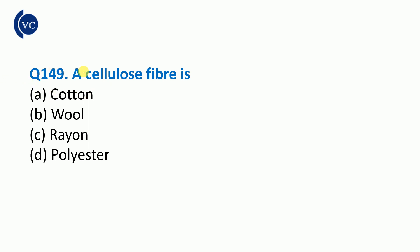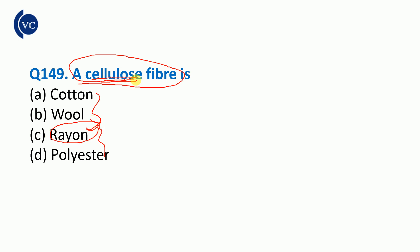Next question: cellulose fiber. Cellulose fiber is called Rayon. Rayon is called cellulose fiber. Rayon is also called artificial silk. Artificial silk is called Rayon.